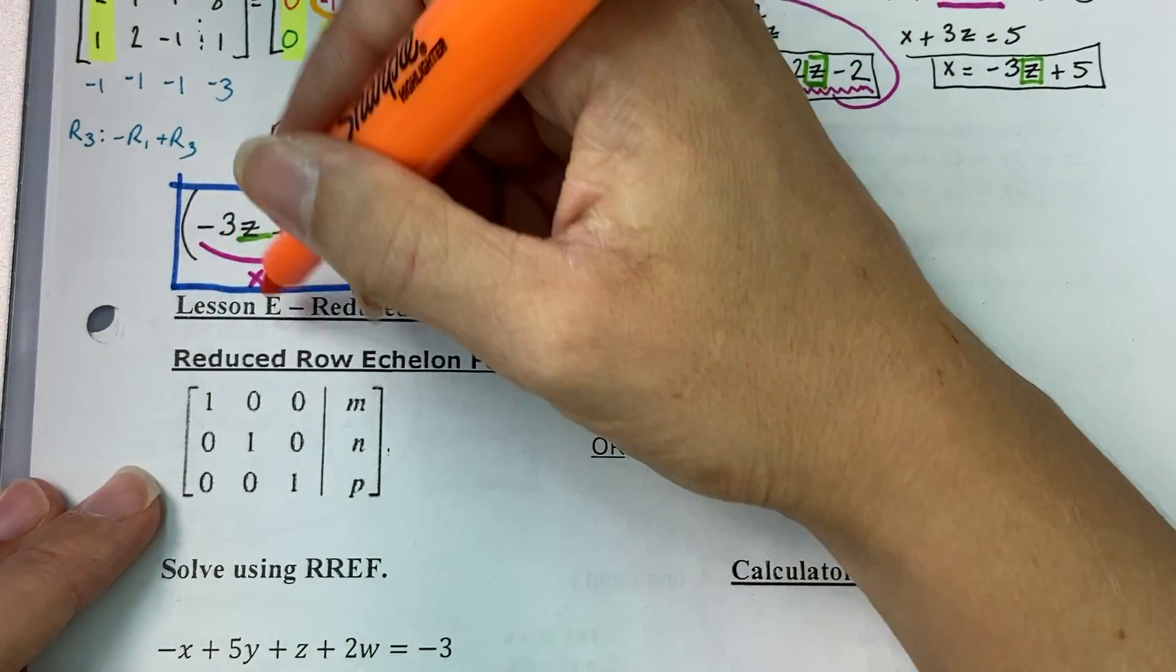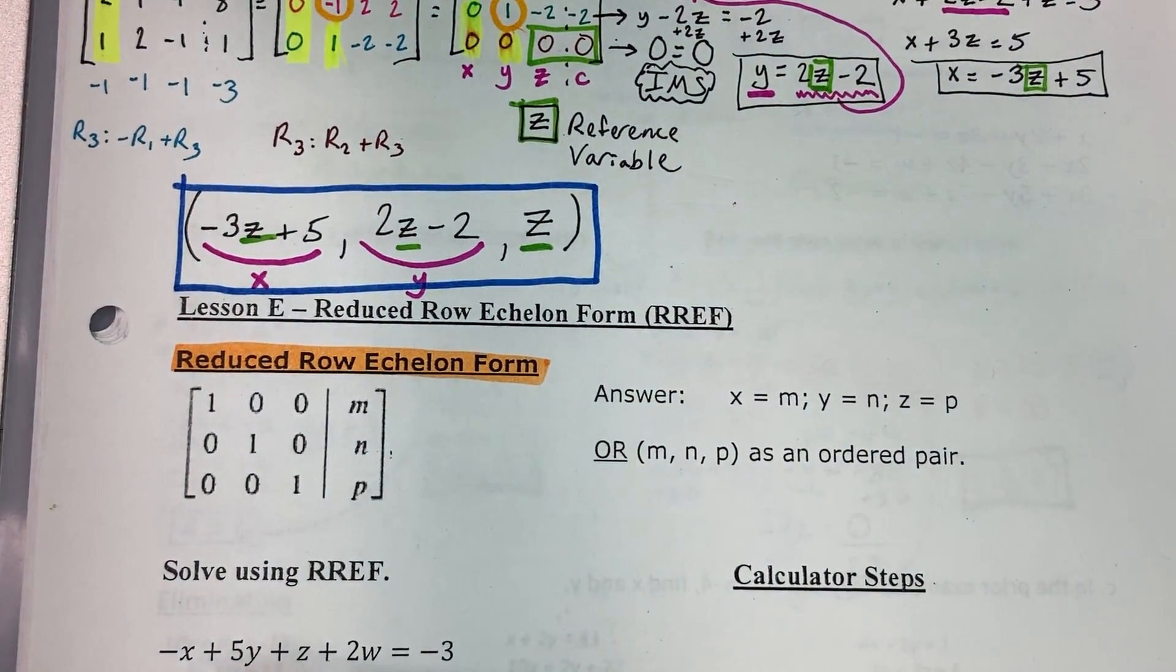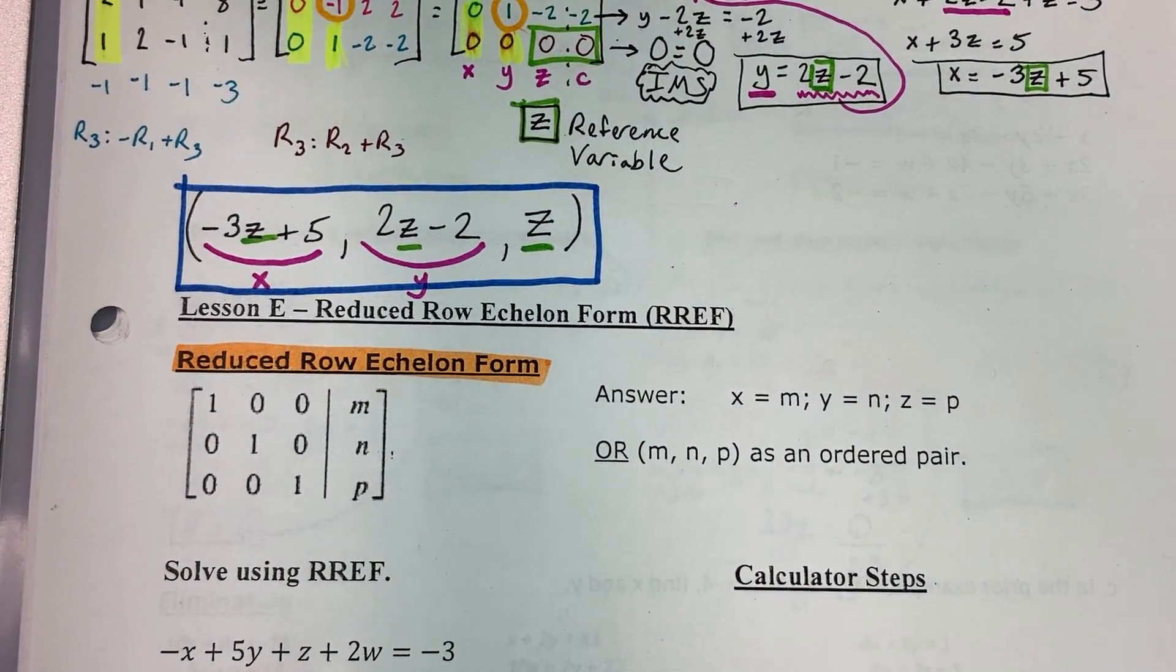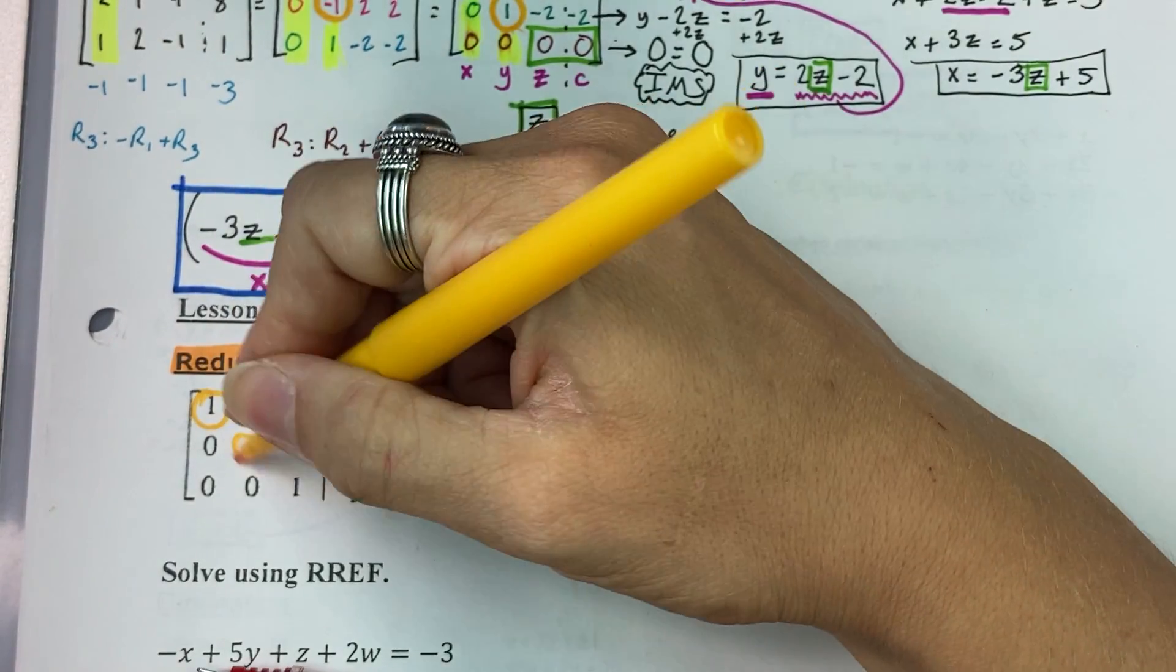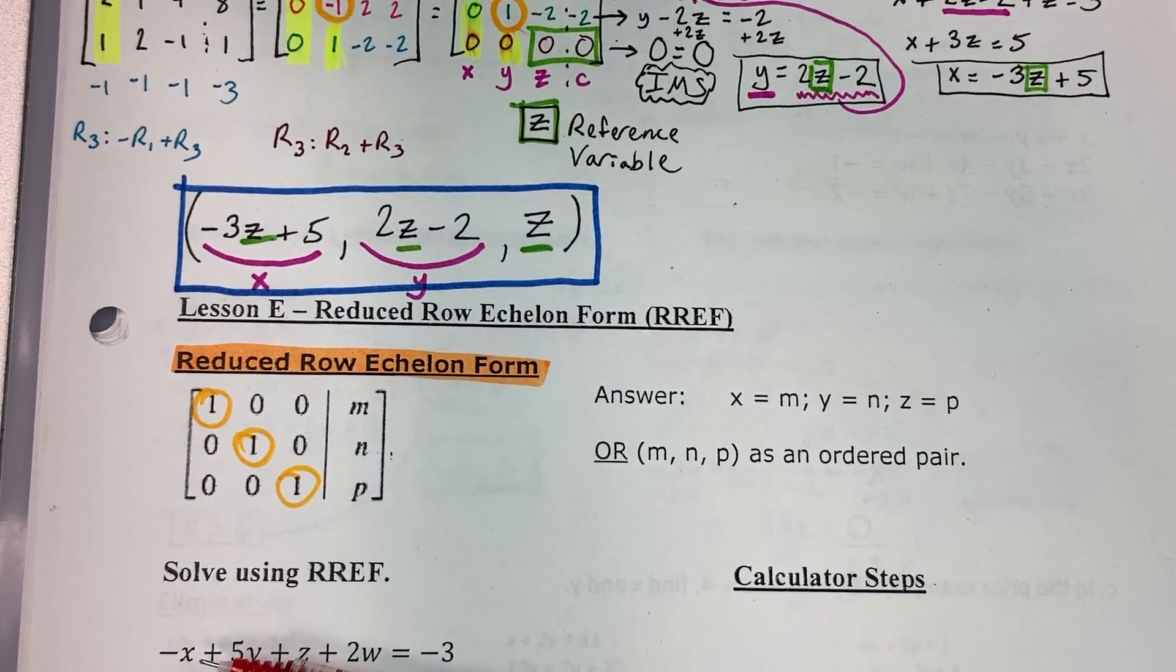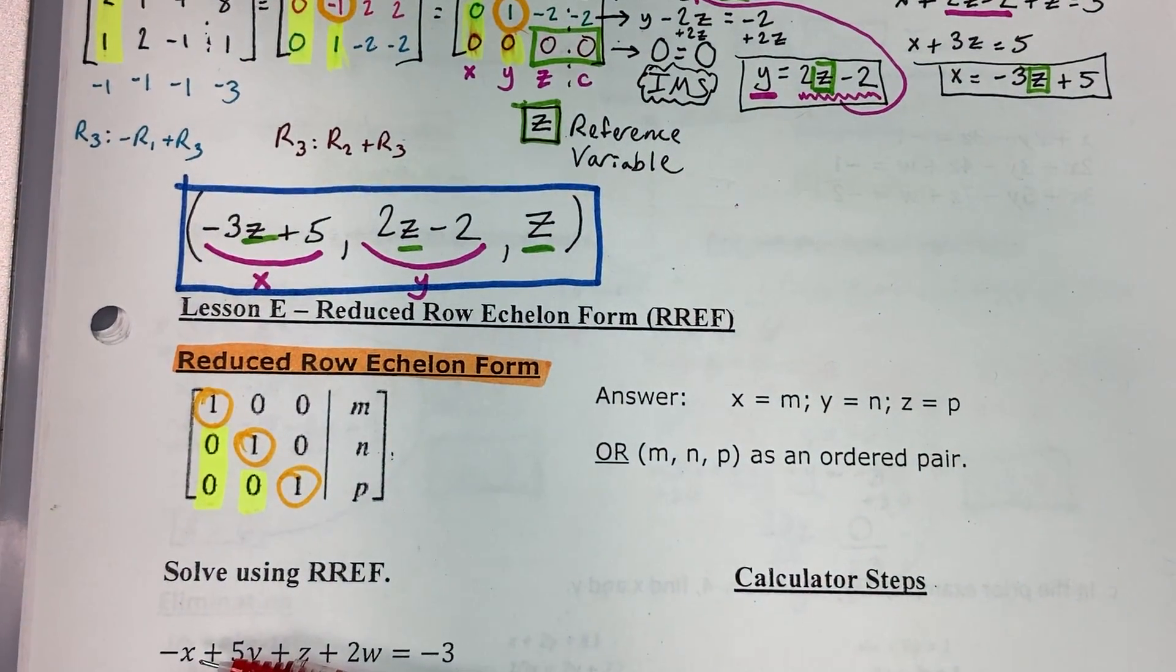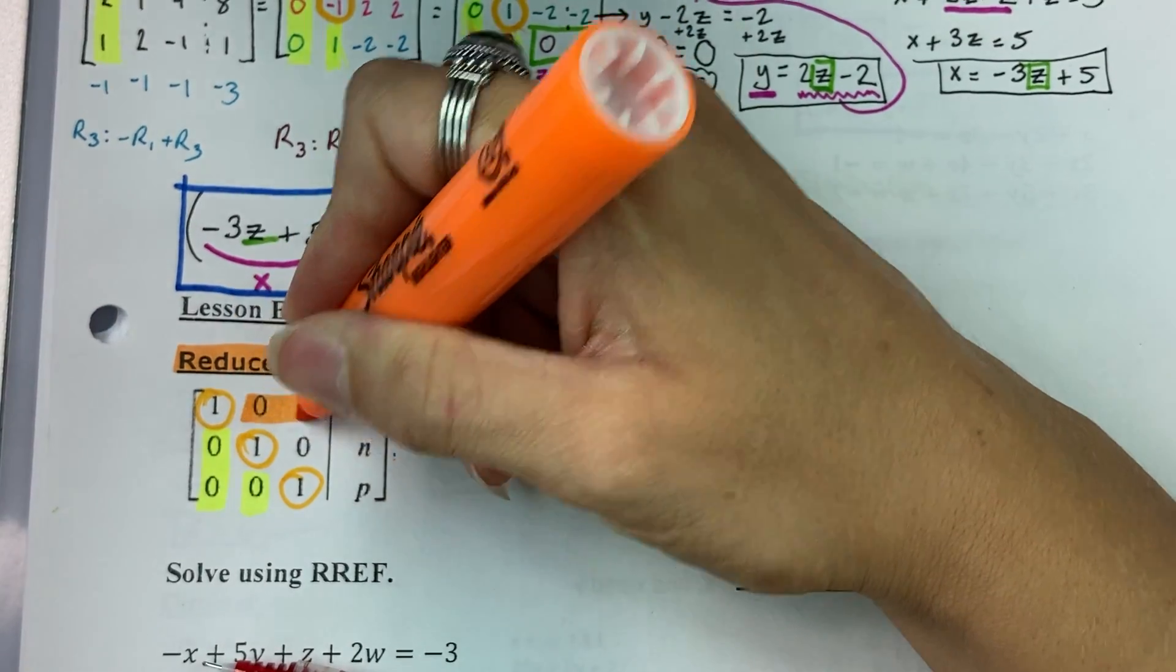Now, this is similar to what we have done with row echelon form, except for one key difference. Notice that reduced row echelon form still has the slant of ones and the zeros below, but in addition to the zeros below, it also has zeros above.